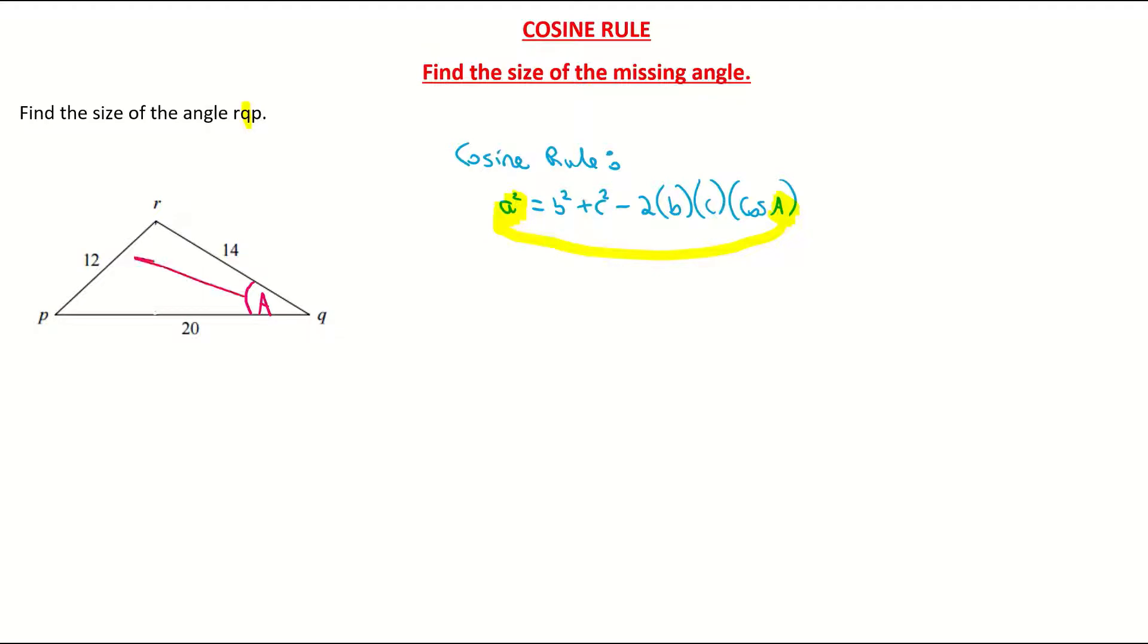The side corresponding to the angle is the side across from it, which is 12, which is my lowercase a. My b and my c are the other two sides. It doesn't matter which one you call b and which one you call c. I'm going to call the 14 the b and the 20 my c, but it's up to you which one is b and c.